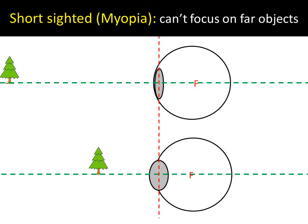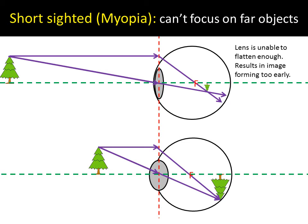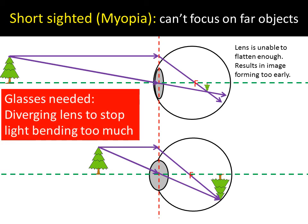If you're short-sighted, that means you can't focus on far-away objects. Seeing things that are close is absolutely fine. But for far objects, the image doesn't appear on the back of the eye, which means you end up with a blurred, out-of-focus image. The lens is unable to get flat enough, so the focal point is too close to the lens and the image is formed way too early. To fix this, you need to spread those ray lines out a little bit, and we use a diverging — concave — lens.